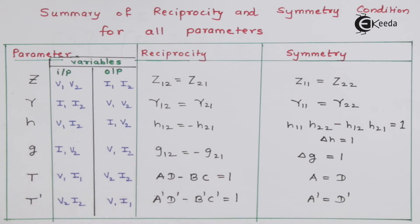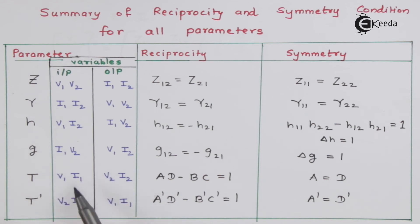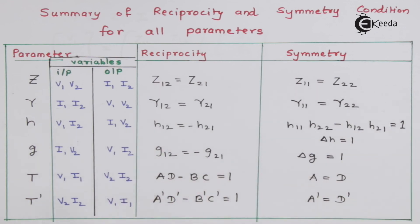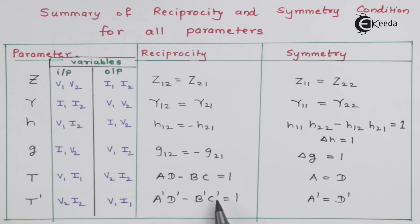Then there are T parameters, or ABCD parameters, or transmission parameters, where V1 and I1 are at input and V2, I2 at output. For T-dash, or inverse transmission parameters, exactly reverse: V2, I2 comes here and V1, I1 goes here. We have seen reciprocity conditions — A·D minus B·C equal to 1 for T parameters, and A-dash·D-dash minus B-dash·C-dash equal to 1 for inverse transmission. For symmetry, A equal to D and A-dash equal to D-dash, as we have proved.